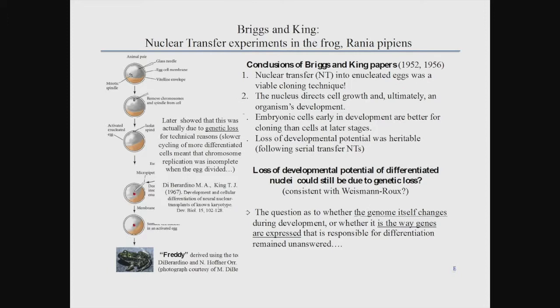In such cases, they observed that the cell was viable and able to divide, and in certain cases go as far as the formation of a tadpole. By refining their techniques, they could achieve metamorphosis of these tadpoles into a normal frog. However, when they took somatic nuclei from embryos at later stages of development, the success rate decreased considerably. Therefore, at the end of this series of experiments, the question of whether the genome itself changes during development, or whether it is the way genes are expressed that causes differentiation, remained unanswered.